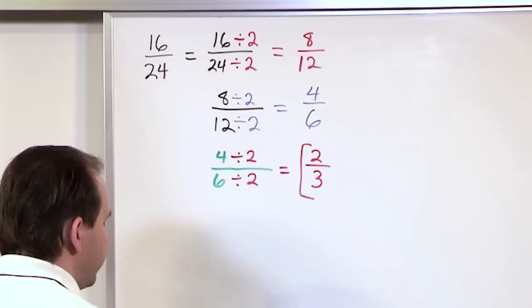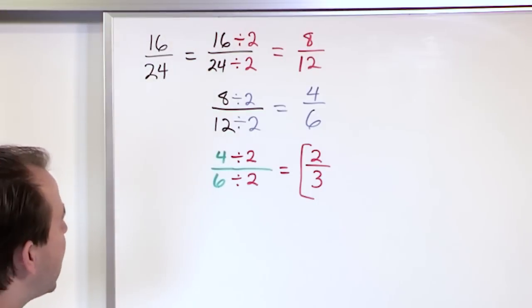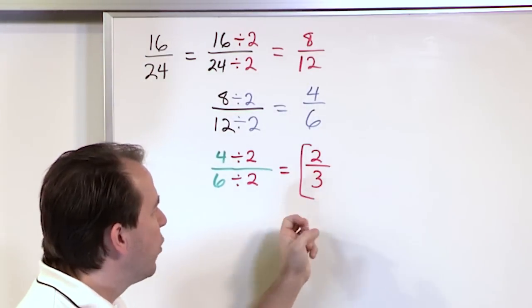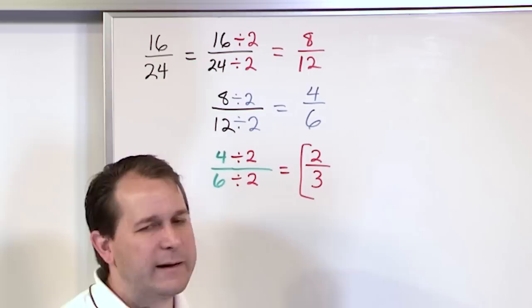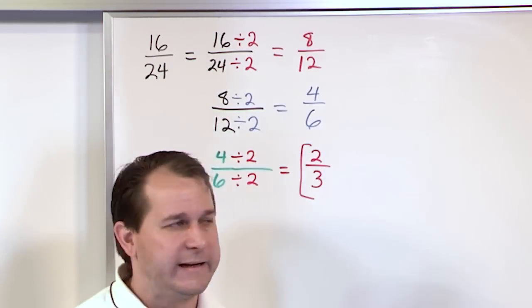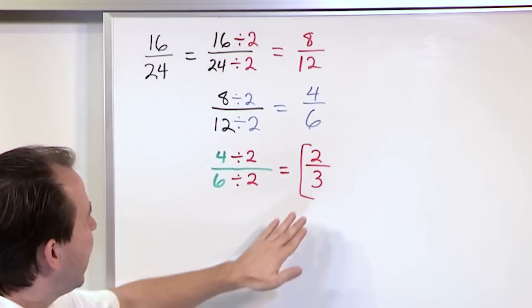Now this is the final answer because I can't divide anything in this fraction anymore by something to make it simpler. The only thing I will divide is the number one and that doesn't make it any simpler. Okay so the answer is two-thirds.